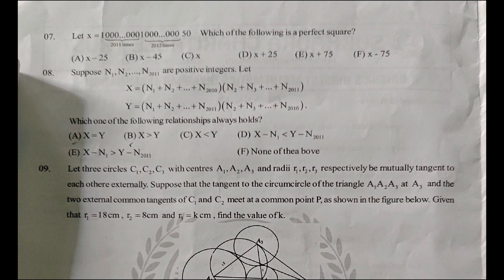Suppose N1, N2, ... N2011 are positive integers. Let X go to equation and Y go to equation. Then X minus N1 is less than Y minus N2011. The answer is 8.